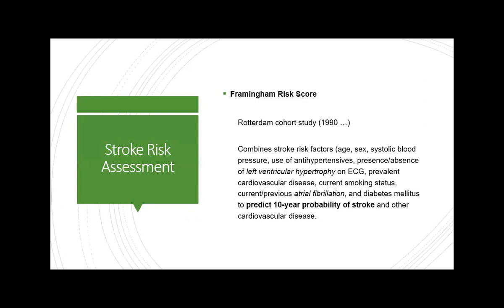Once we know the patient's risk factors, we have multiple risk assessment tools available. The Framingham Risk Score was derived from the Rotterdam Cohort Study in the 1990s. It combines risk factors mentioned previously, with specific inclusion of antihypertensive use, hypertensive left ventricular hypertrophy seen on ECG, and atrial fibrillation. It can be calculated using many apps available today and predicts a 10-year probability of stroke and other cardiovascular disease.